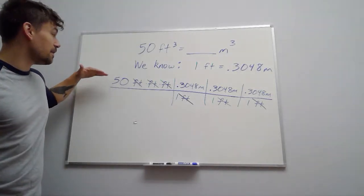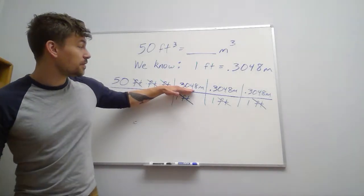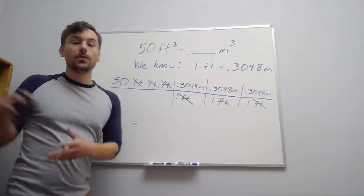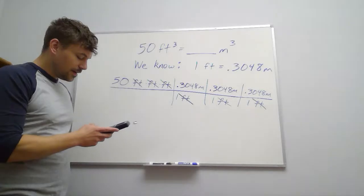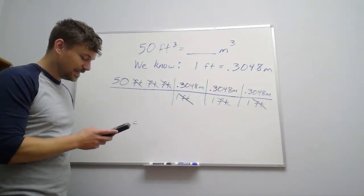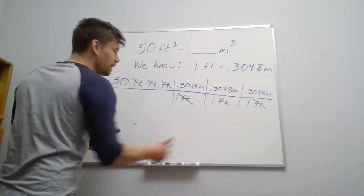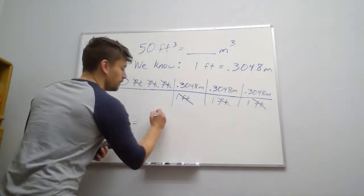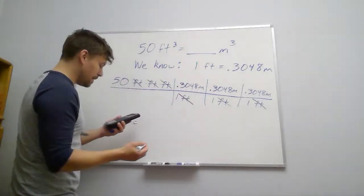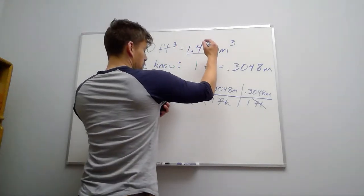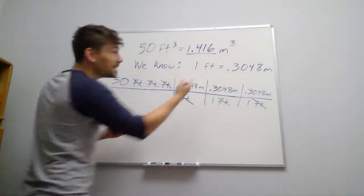So we're going to multiply across the top: 50, and then 0.3048. And that shows up three times. So I can't do that one in my head. So let's see what that comes out to. I believe we end up with, well, let me put it back up there, 1.416 if I round.